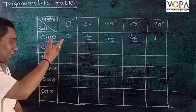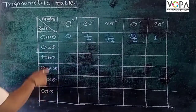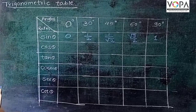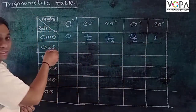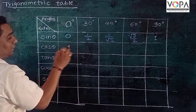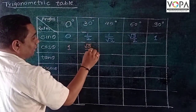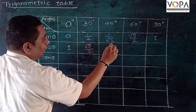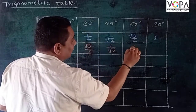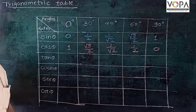If you can remember this first row, you can make all the trigonometric ratios easily. For cos θ, write the sine values in inverse order: cos 0° = 1, cos 30° = √3/2, cos 45° = 1/√2, cos 60° = 1/2, and cos 90° = 0.